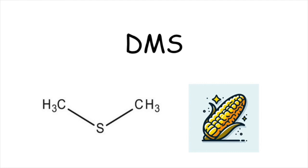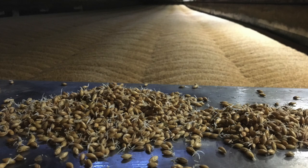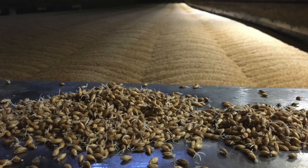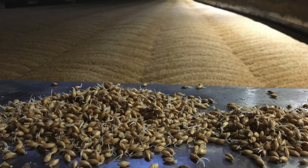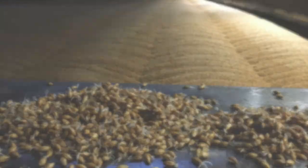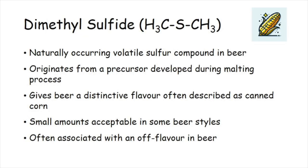Dimethyl sulfate is a naturally occurring volatile sulfur compound that is often associated with an off-flavor in beer. DMS originates from a precursor which develops in barley during malting. It gives a distinctive aroma and flavor often described as canned or creamed corn.